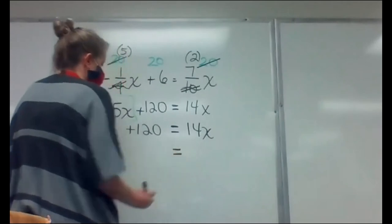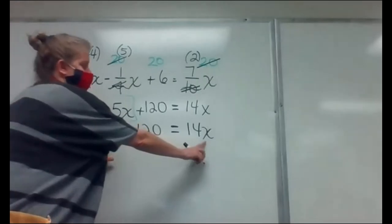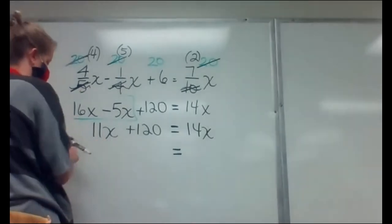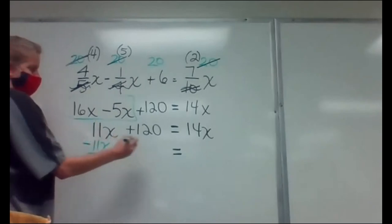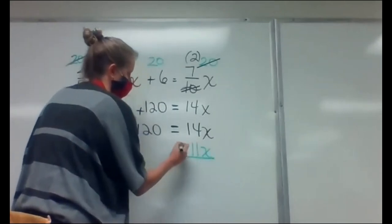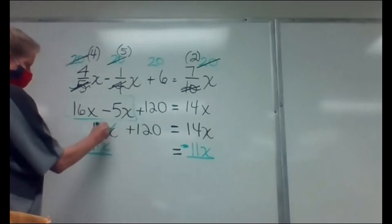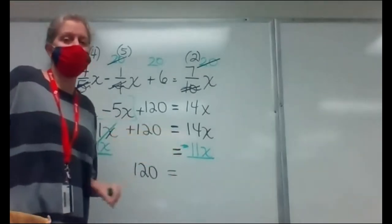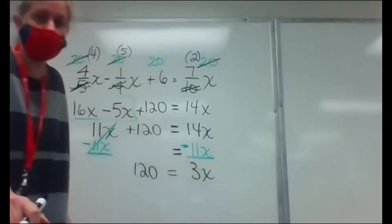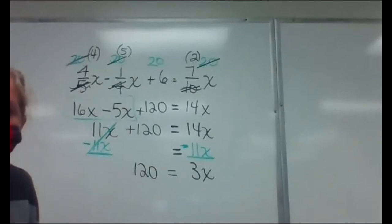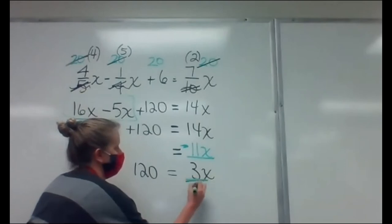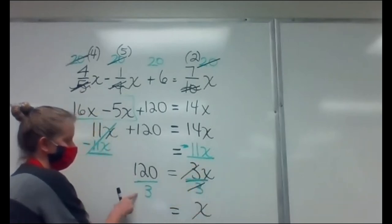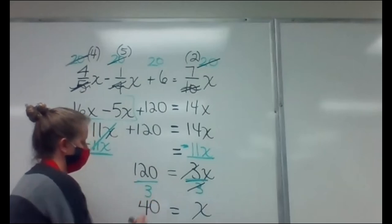Now I have X's on both sides, so I cancel out the smallest one — the 11X. Subtract 11X from both sides. X's are gone on the left; all that's left is 120. On the right, 14 minus 11 gives me 3X. X needs to be alone — the 3 hooked onto it goes away by dividing both sides by 3. The threes cancel, X is alone. 120 divided by 3 gives me 40.